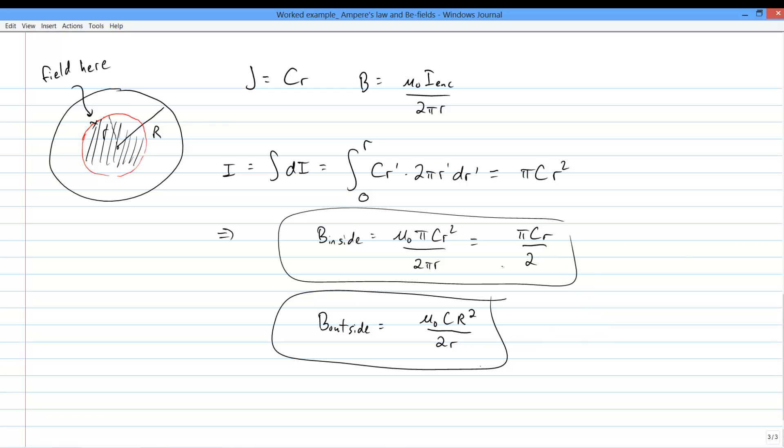And that's how you find B-fields with Ampere's law. As a reminder, every step we took had a correspondent in Gauss's law, which, if you already know Gauss's law, can make it a lot faster to learn Ampere's law.